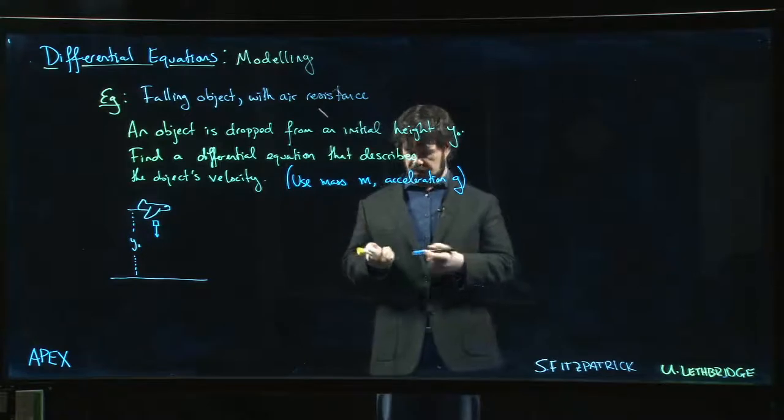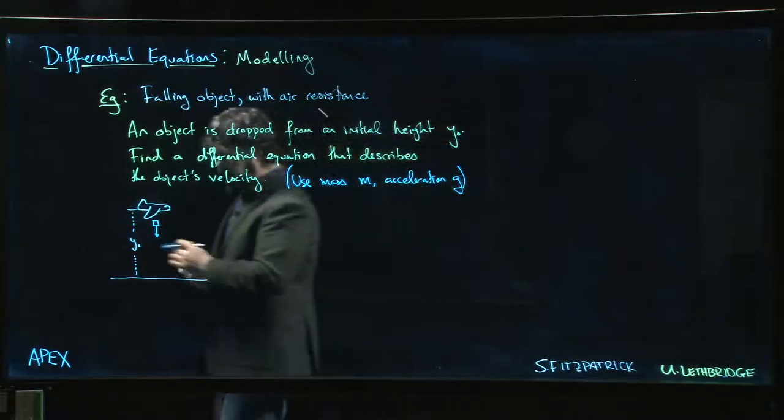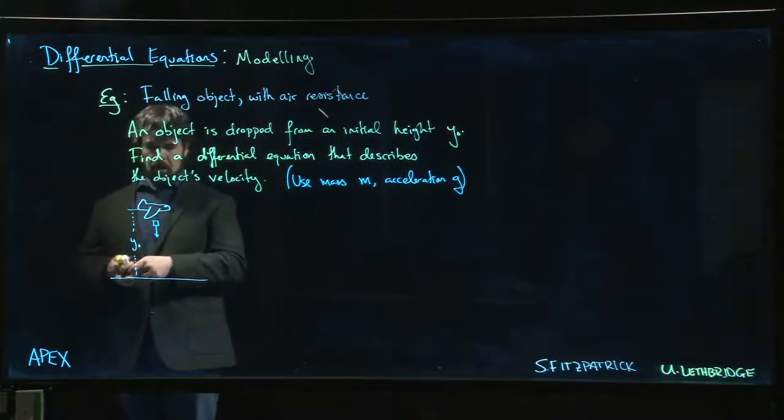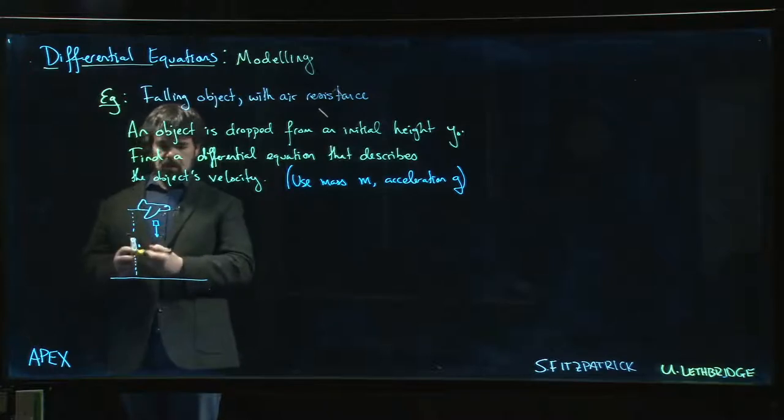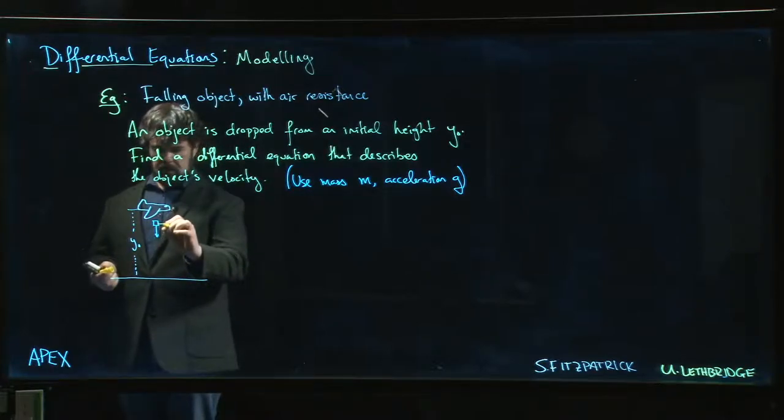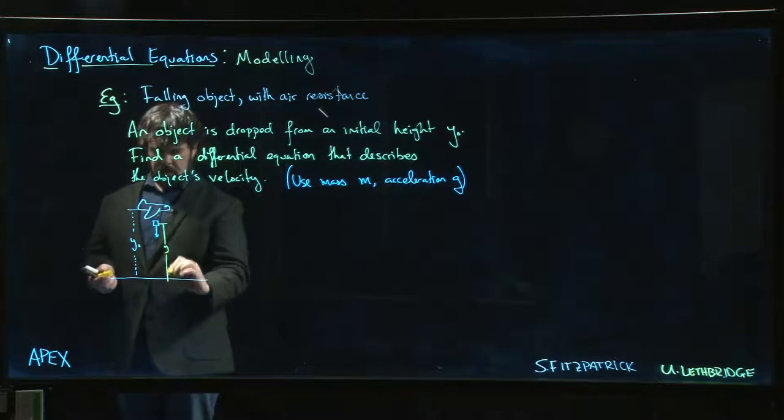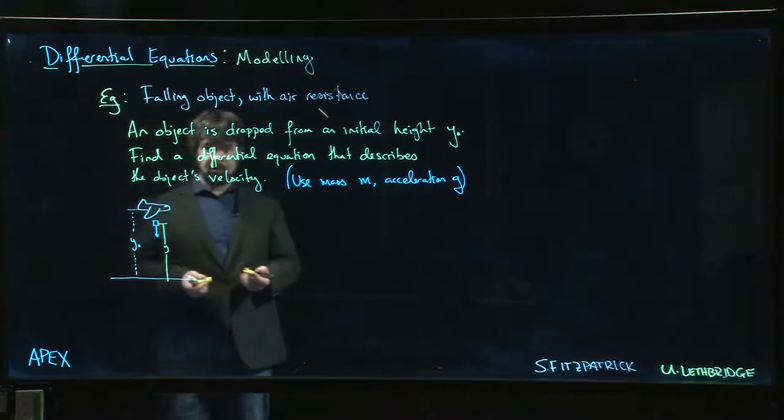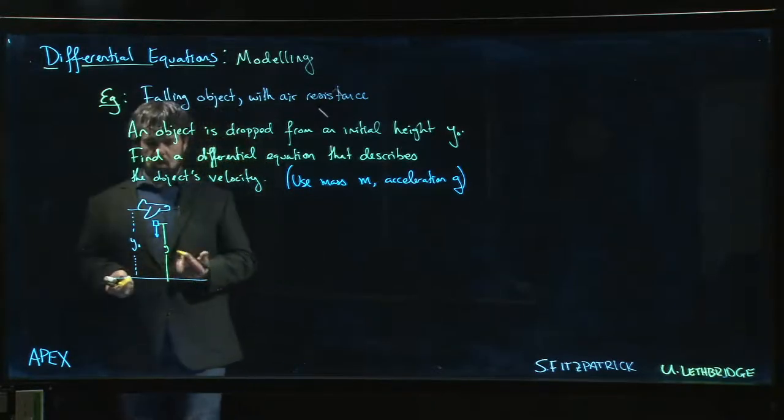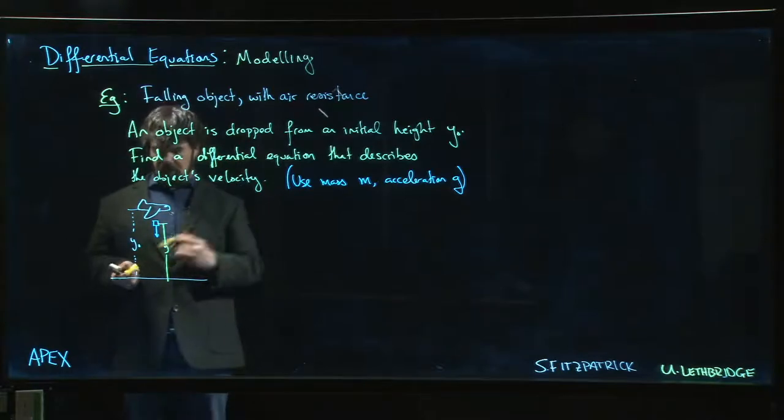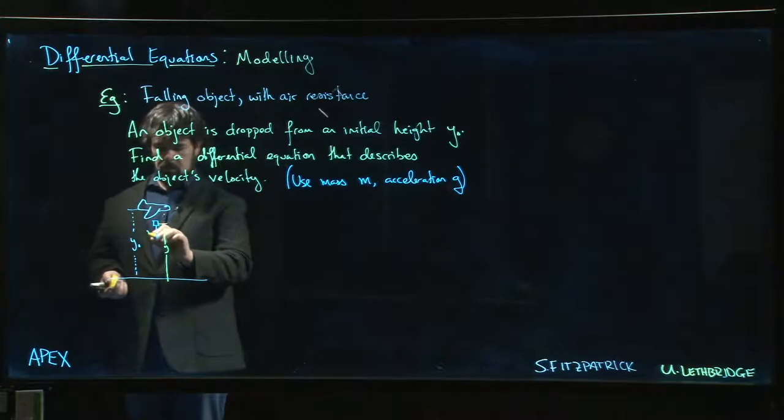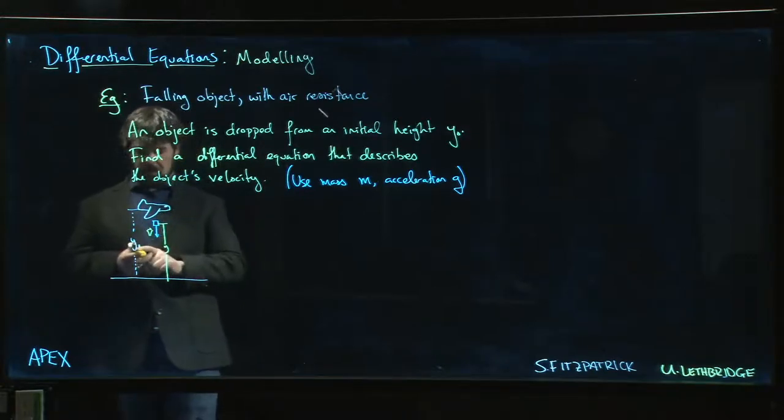We would like to describe that object's trajectory. Essentially we'd like to find - depending on how we do this - we can certainly talk about the height y of the object. We could describe the height as a function of time, or maybe it makes sense to first look for the velocity.